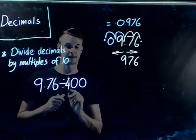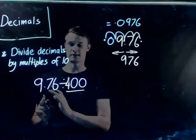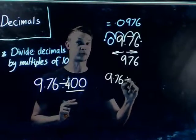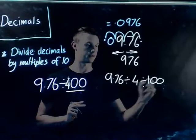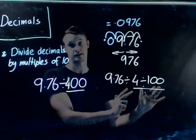Effectively, 9.76 is the same as 9.76 divided by 4, then divided by 100. So, we've basically just separated this into two separate division equations.